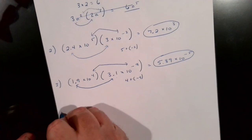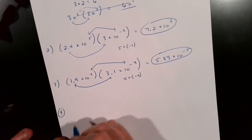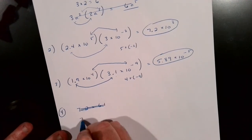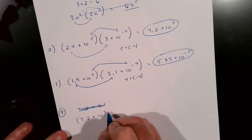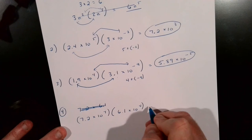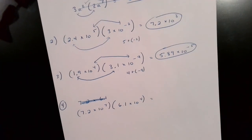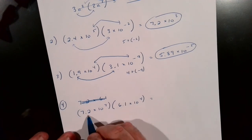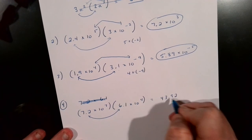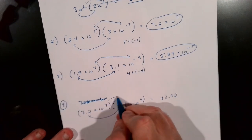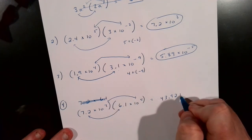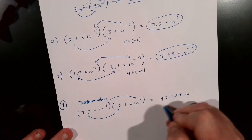Now there is the catch — pay attention to this one. Let's say we have 7.2 times 10 to the 7th power, and we want to times that by 6.1 times 10 to the 4th power. We take 7.2 and times it by 6.1, and we end up with 43.92. Then we add the exponents: 7 plus 4 gives 10 to the 11th power.